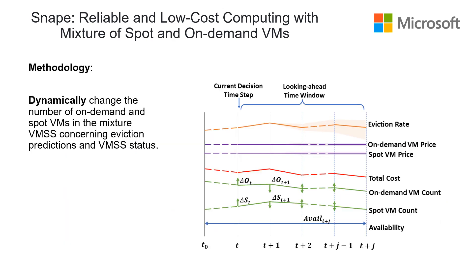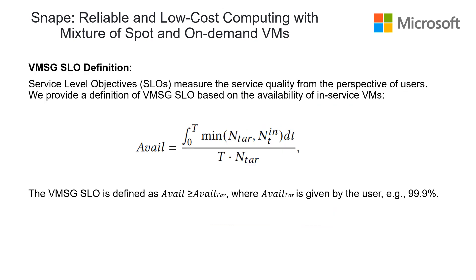Our methodology dynamically adjusts the number of on-demand VMs and Spot VMs according to the Spot eviction prediction and the VMSG status. For example, if the eviction rate is predicted to be high in the future, we could decide to add more Spot VMs or replace some Spot VMs with on-demand VMs. We need to define our target, the VMSG SLO, which measures service quality from the user's perspective. The SLO is defined based on the availability of in-service VMs — specifically, the time VMs are in service over the total time including loading time — and the availability should be larger than the target availability defined by the user.